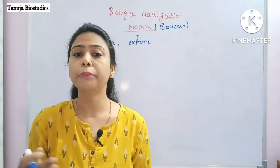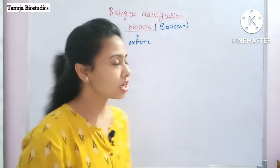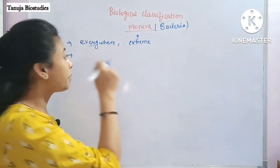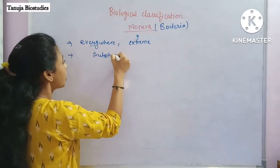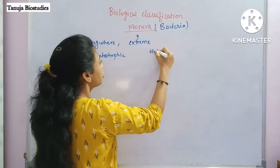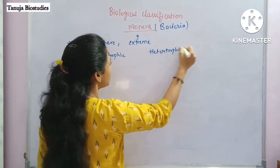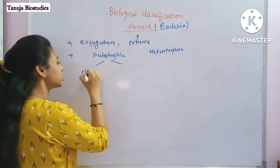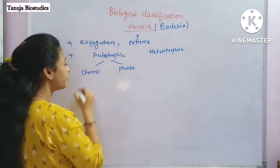In other words, bacteria are in both categories — they are autotrophic as well as heterotrophic, as I mentioned in the previous video. Under the autotrophic condition, there are chemo-autotrophs and photo-autotrophs.